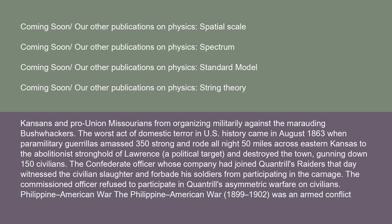The worst act of domestic terror in U.S. history came in August 1863, when paramilitary guerrillas — 350 strong — rode all night 50 miles across eastern Kansas to the abolitionist stronghold of Lawrence, a political target, and destroyed the town, gunning down 150 civilians. The Confederate officer whose company had joined Quantrill's Raiders that day witnessed the civilian slaughter, forbade his soldiers from participating in the carnage, and refused to participate in Quantrill's asymmetric warfare on civilians.